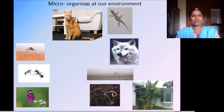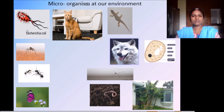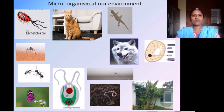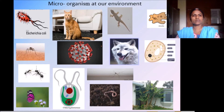Just have a look at the following pictures. This is a type of bacteria called E. coli. A type of fungi called yeast. A type of algae called Chlamydomonas. This is a type of protozoa called Amoeba. And the most dangerous virus is called Corona.